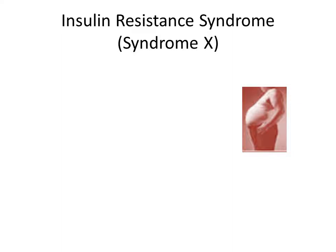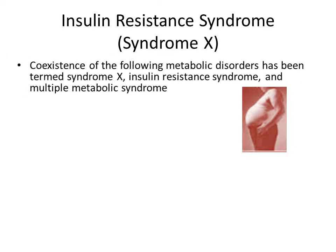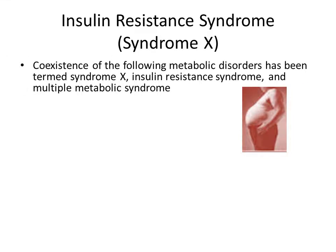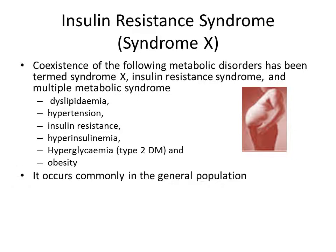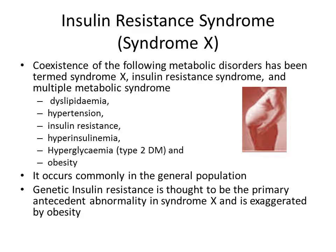Insulin resistance syndrome, or Syndrome X, is the co-existence of a few metabolic disorders, also known as multiple metabolic disorders. These include dyslipidemia, hypertension, insulin resistance, hyperinsulinemia, hyperglycemia (type 2 diabetes mellitus), and obesity. It occurs commonly in the general population, and genetic insulin resistance is thought to be the primary cause, exaggerated by obesity.